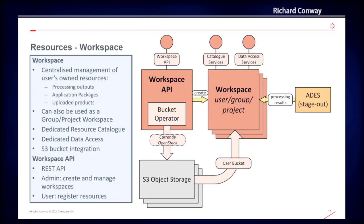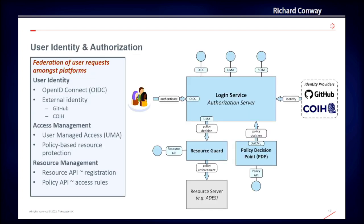The user workspace centralises the user's management of owned resources through personal resource catalogue and data access services, which allows the user to further exploit their added-value products. Through its API, the workspace provides an abstraction that integrates with the host infrastructure — for example, provisioning of user S3 buckets in CREODIAS. For platforms to successfully interoperate, they must federate user access. Each building block is secured by means of our identity and access management framework, which uses OpenID Connect and user-managed access standards to enforce all access attempts.